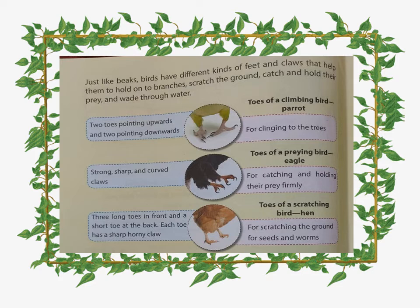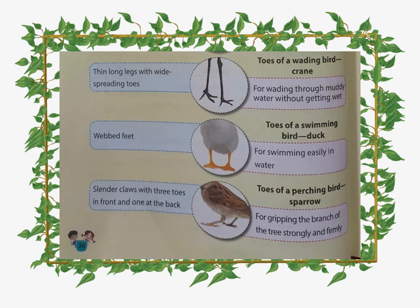Third one is the toes for a scratching bird, that is the hen. It has three long toes in front and one short toe at the back. Each toe has a sharp, horny claw. These feet are good for scratching the ground for seeds and worms, as you can see hens do.